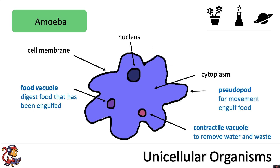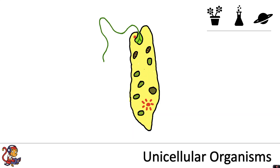The extensions around the amoeba are called pseudopods and they are for movement or to engulf food. The amoeba will extend a pseudopod to travel towards food and will then engulf it by surrounding it and absorbing it.